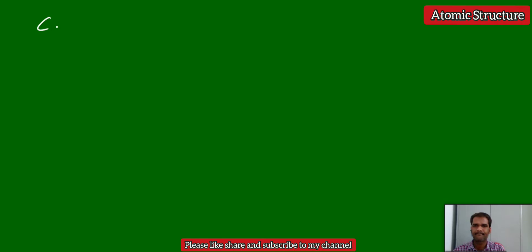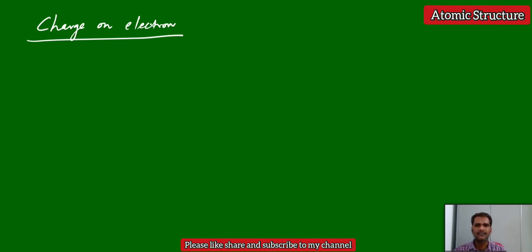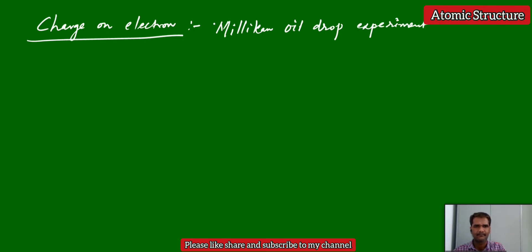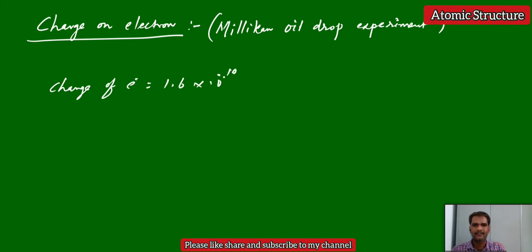We will see the charge of electron. This charge on electron was found by the scientist R.A. Millikan by using his Millikan oil drop experiment. The charge of the electron is 1.6 into 10 power minus 19 coulombs. This is the charge of electron based on his experiment.